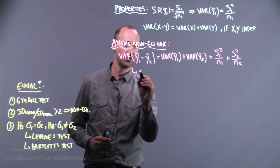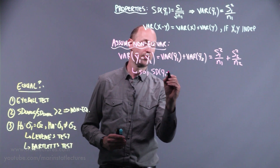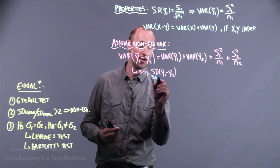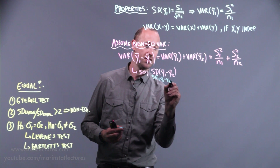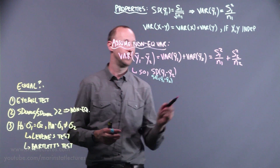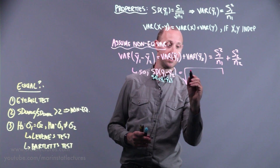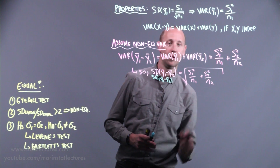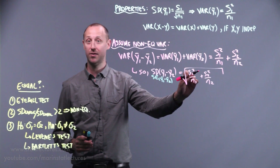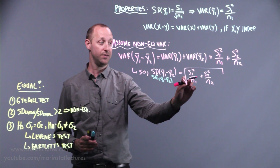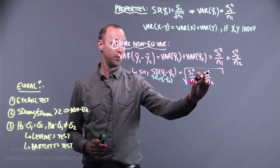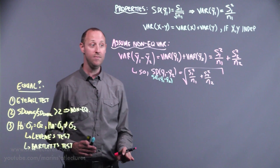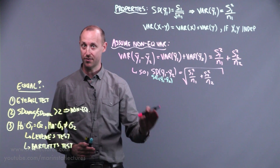From this, the standard error for the difference in means is the square root of that variance. We take the sample standard deviation of group 1 squared — their variance — divided by their sample size, add the sample standard deviation of group 2 squared divided by their sample size, and take the square root. That's how we get the standard error for the difference in means.